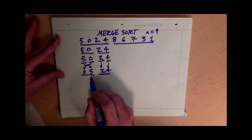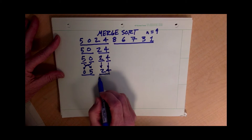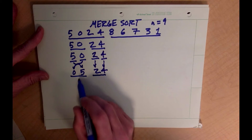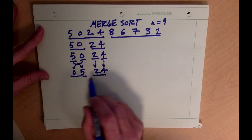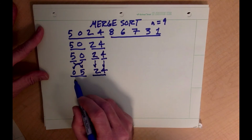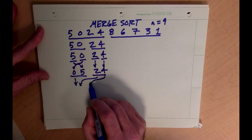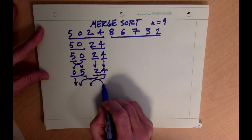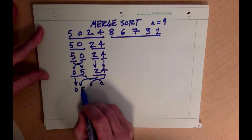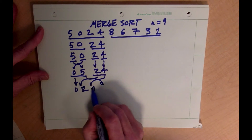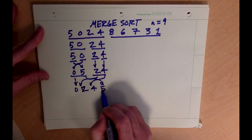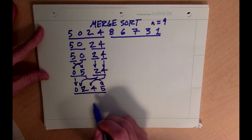Now I can sort these by just combining them. These two lists have already been sorted. I can combine them: 0, 2, 4, and 5. I'll combine them into one final sorted list for this side.